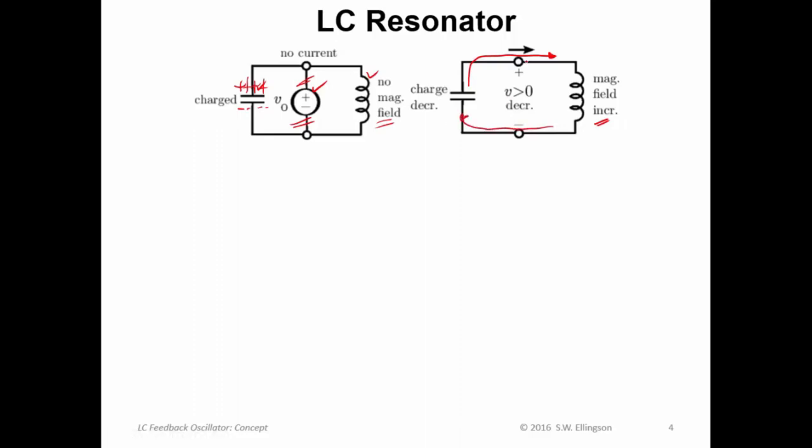And that charge wants to redistribute. So initially the voltage here is positive. But what happens over time is eventually the charge is equalized. So there is no net difference in charge across the capacitor. So there is no voltage across the capacitor.